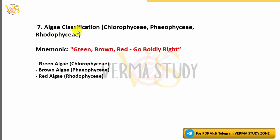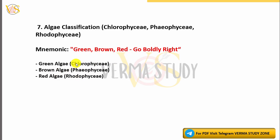7. Algae Classification: Chlorophyceae, Phaeophyceae, Rhodophyceae. Mnemonic: 'Green, Brown, Red.' Green Algae = Chlorophyceae, Brown Algae = Phaeophyceae, Red Algae = Rhodophyceae.